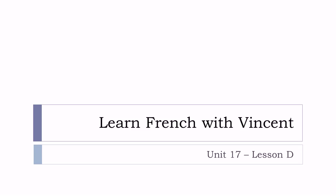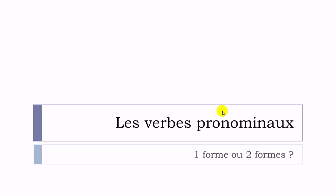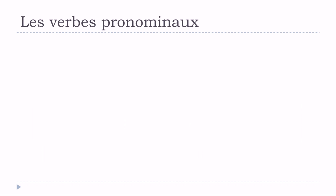Bonjour à tous and welcome to Learn French with Vincent. This is Unité 17, Leçon D. In this lesson we'll see together les verbes pronominaux, and we'll try to see whether it's possible to see one form or two forms — une forme ou deux formes.